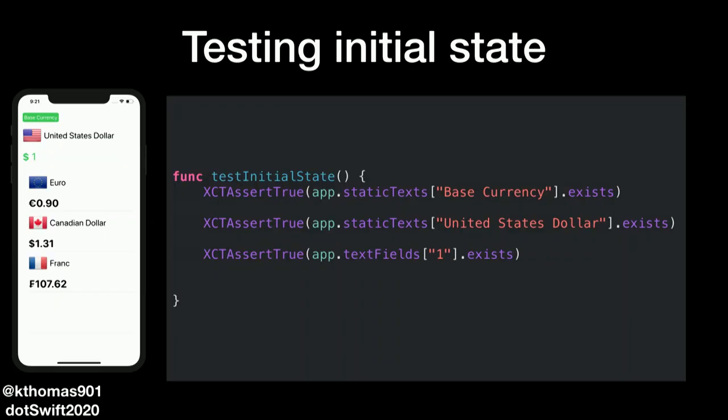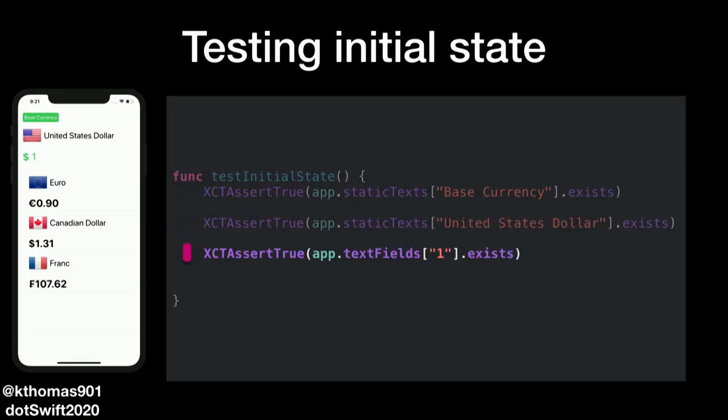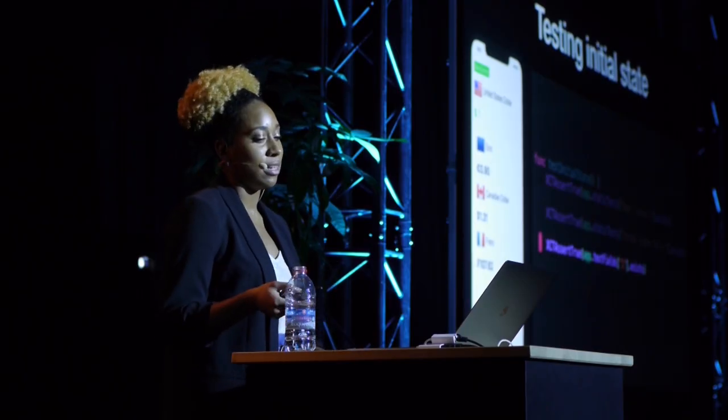Let's get into our first test. We're going to test the initial state of the app when you load it up. The first thing is checking where the base currency label is and making sure it exists. Then we look for the United States dollar label — checking this tells us it's actually our base currency. All other currencies are in a table. We also make sure the initial value of our text field is one. But the issue with this test is we're hard-coding these strings, and if we want to access these elements in other tests, we'll have to hard-code those strings again, which is really prone to developer error.